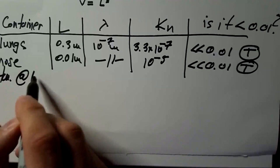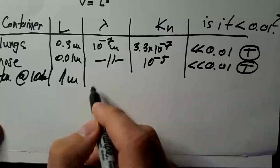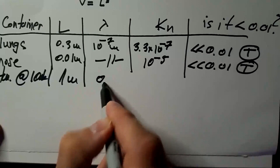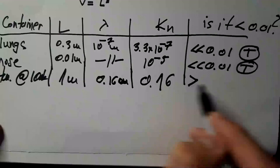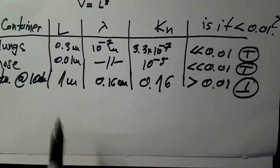So, to conclude with, let's take atmosphere at 100 kilometers height, and let's take container 1 meter, so a cube of 1 meter. Now, the mean free path is much bigger over there, because the density is smaller, and it turns out that it is about 16 centimeters, and then, when we calculate this number, it's 0.16, and this is larger than 0.01, so we cannot conclude that 1 meter box is sufficient.